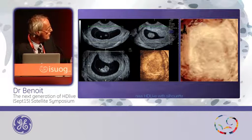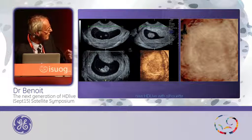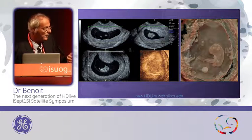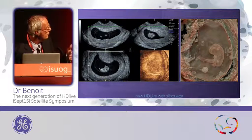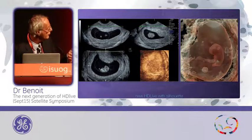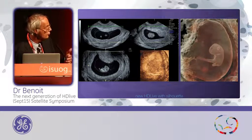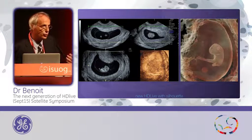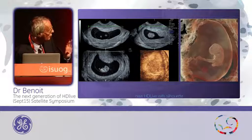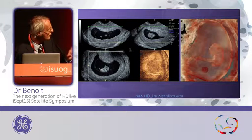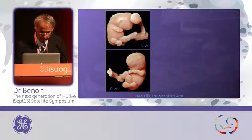Here, you choose HDLive and you will play with the silhouette. With silhouette, it's a kind of transparency and you can see what is inside. After, you have to play with the position of the light and the transparency. So you do not have to cut with a magic cut — you can look at the whole gestational sac with the transparency.